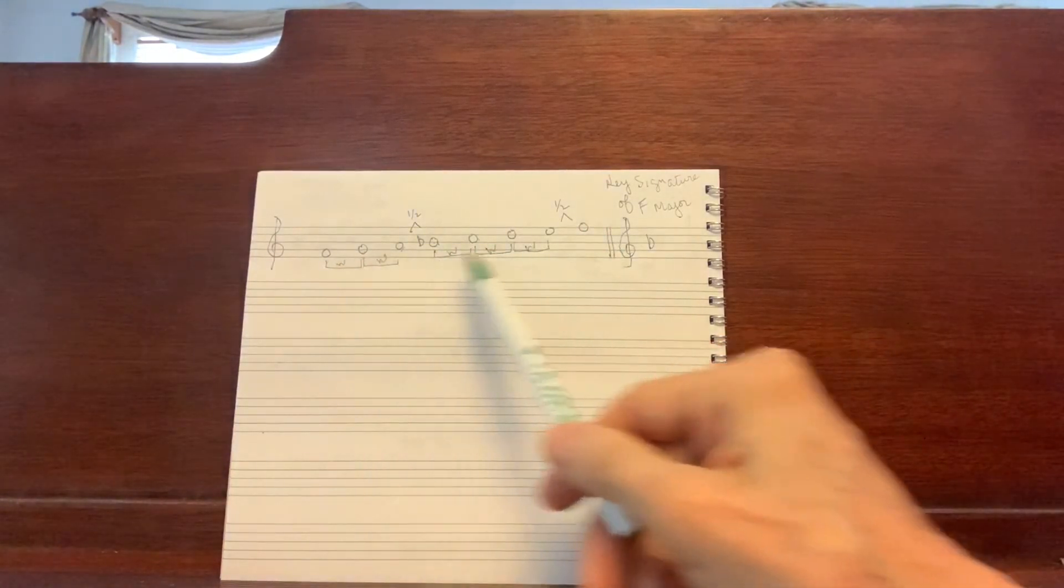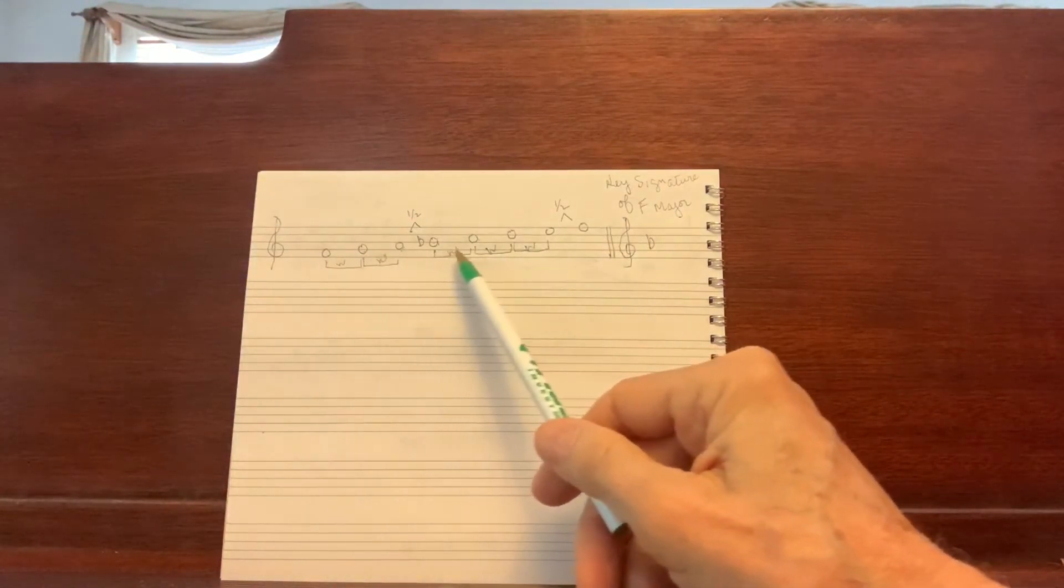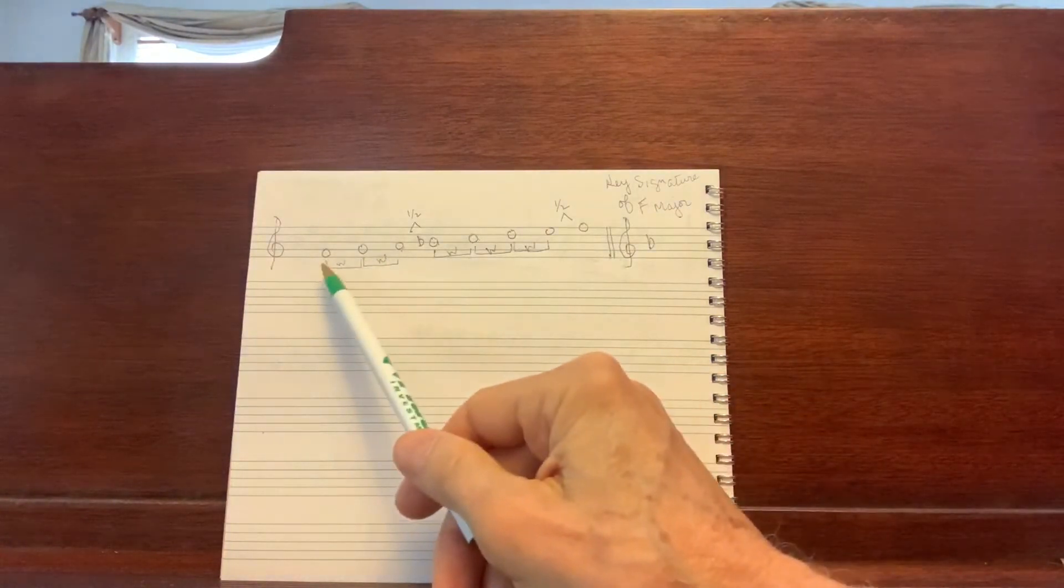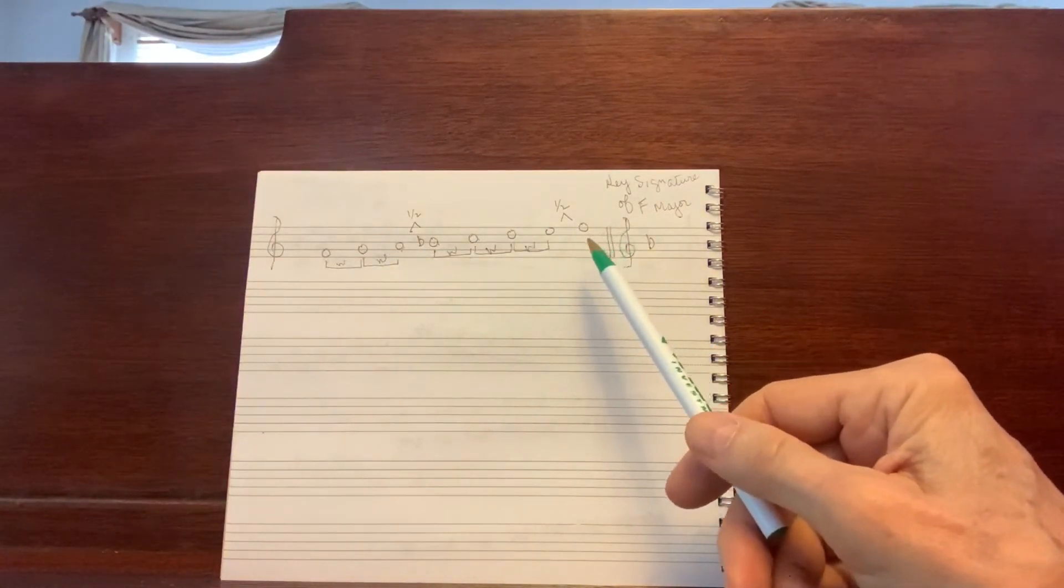Let's add the B flat, and we'll just go up a couple of times completely. F, G, A, B flat, C, D, E, F. And one more time. And that's our F scale on the treble clef.